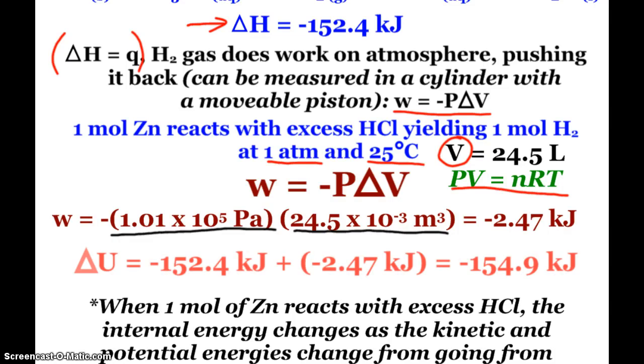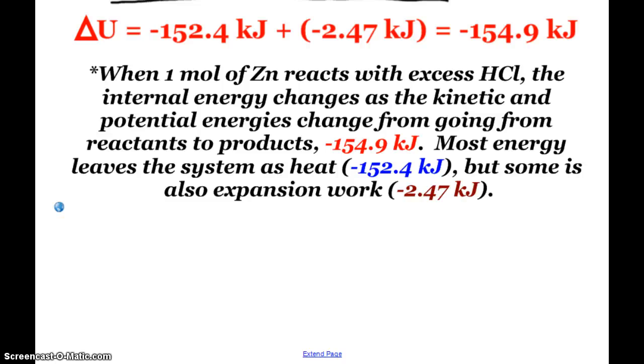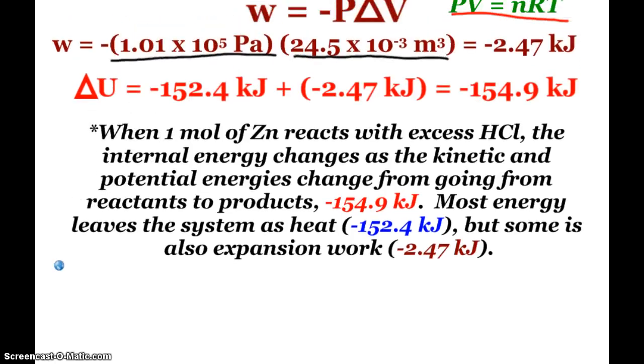So from the first law of thermodynamics, change in internal energy for this reaction is my delta H, my Q, plus work, and it's negative 154.9 kilojoules. So what does that mean? When one mole of zinc reacts with excess hydrochloric acid, the internal energy changes as we're going from reactants to products, a total of 154.9 kilojoules. Most of that comes in the form of heat, 152.4. And then there's a little bit of that that is also expansion work, 2.47.